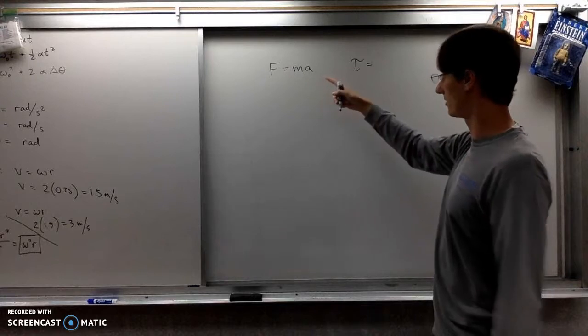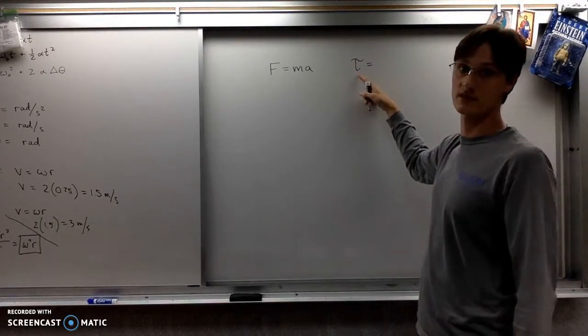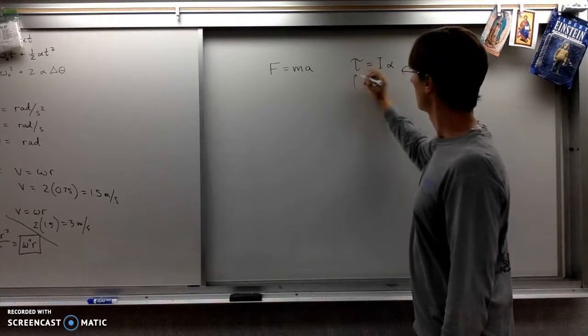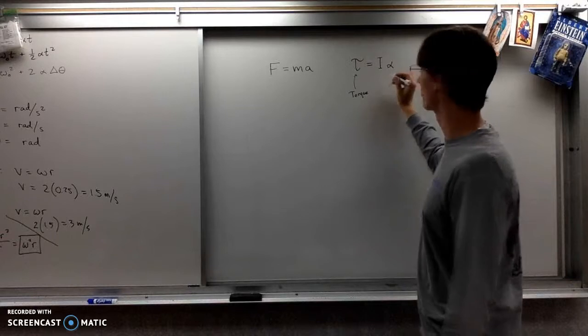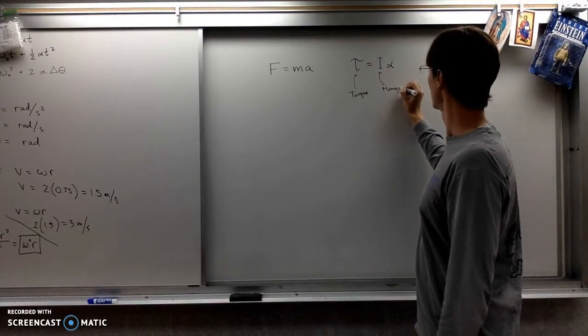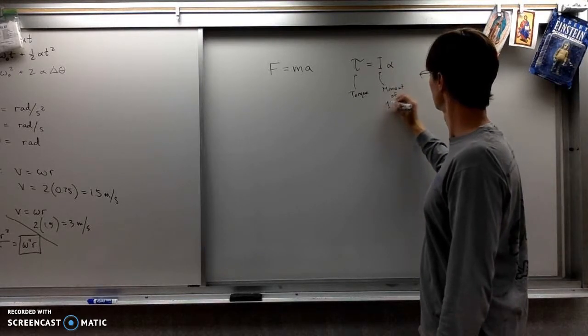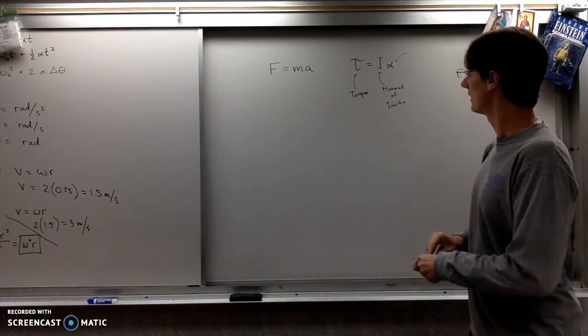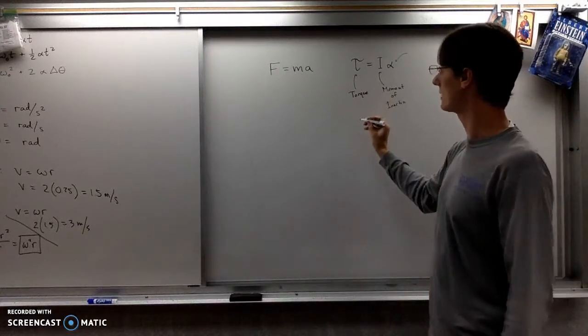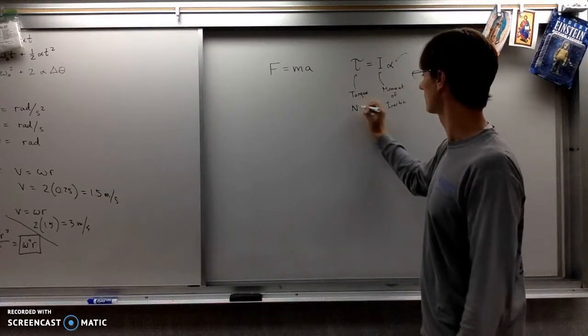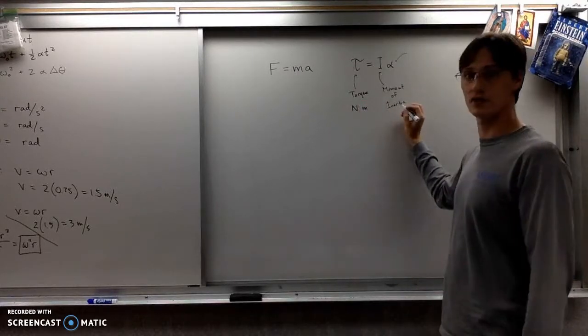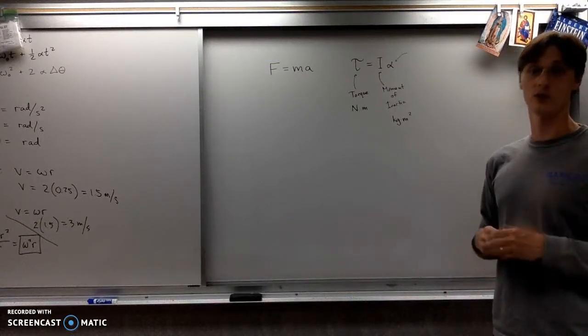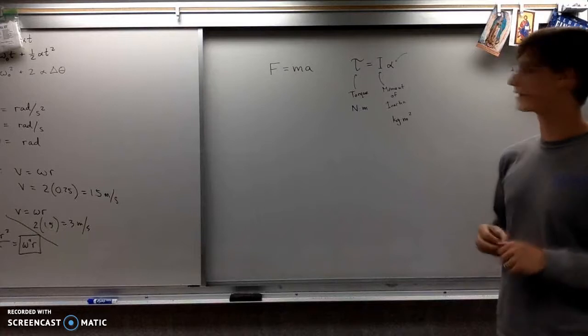The analog to this equation is torque - this symbol is tau, but you can just say torque - equals I alpha. So torque, which we'll have another formula for in a little bit, equals moment of inertia times your angular acceleration. In terms of units for these things, torque is measured in Newton meters, and moment of inertia is measured in kilogram meters squared. We'll see why perhaps later.